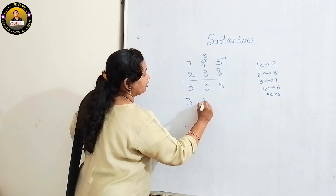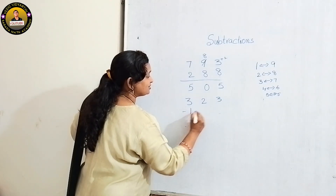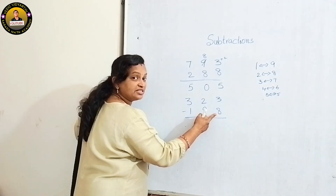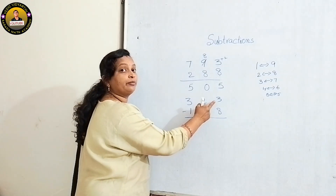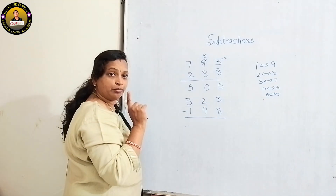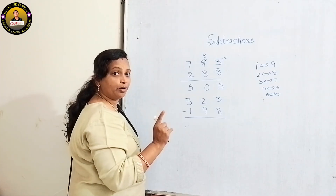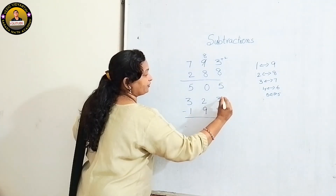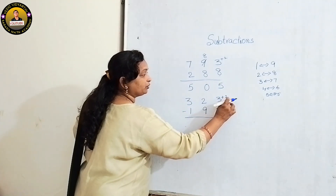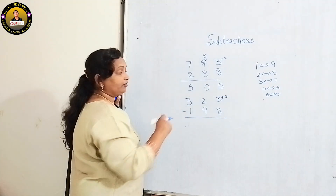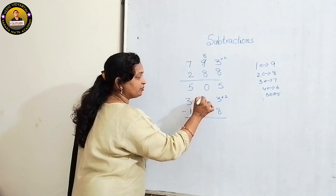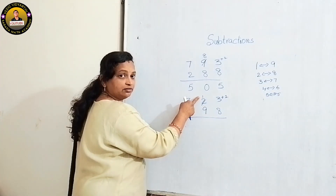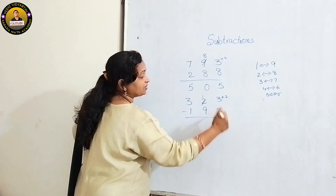323 minus 198. Here 3 and 8 are mismatched — we can't subtract 8 from 3. Normally we would take a borrow, but here I am showing how to do it without borrowing. What's the complement of 8? It is 2. So add 2 to 3. Whenever you add the complement, decrease 1 from the previous number — so 2 becomes 1.